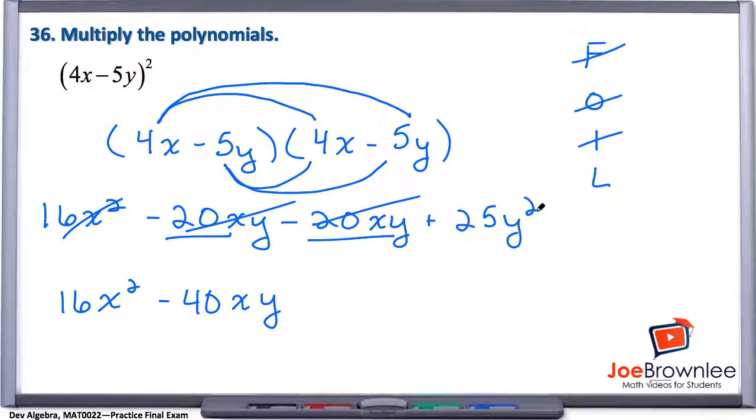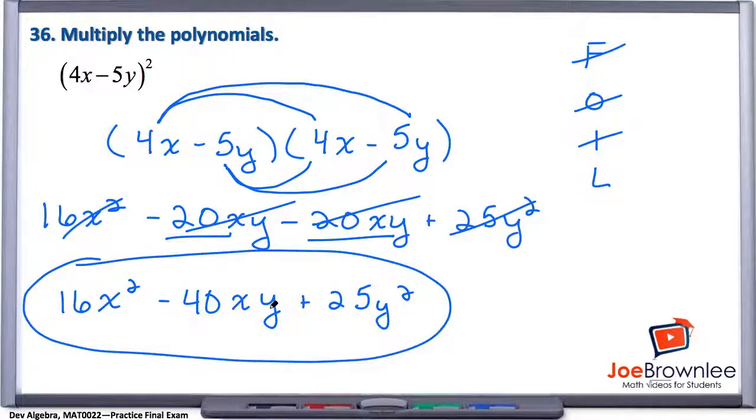And lastly, again, no other y squareds. So this positive 25y squared can just come down. And so here we have it, number 36, 16x squared minus 40xy plus 25y squared.